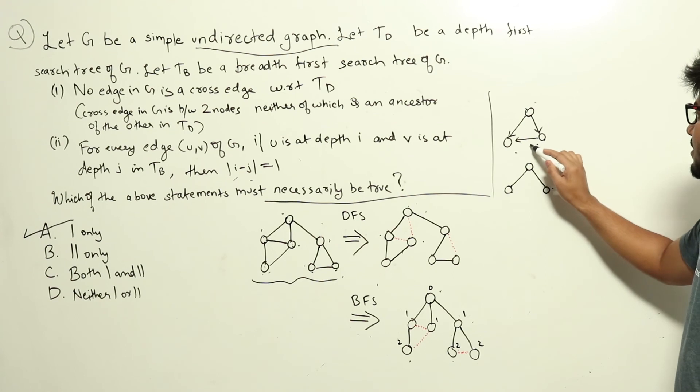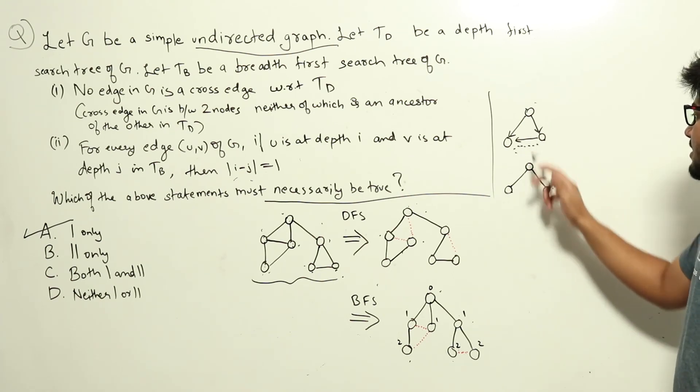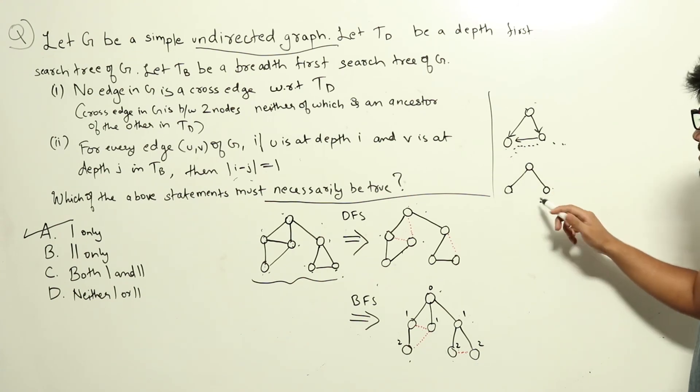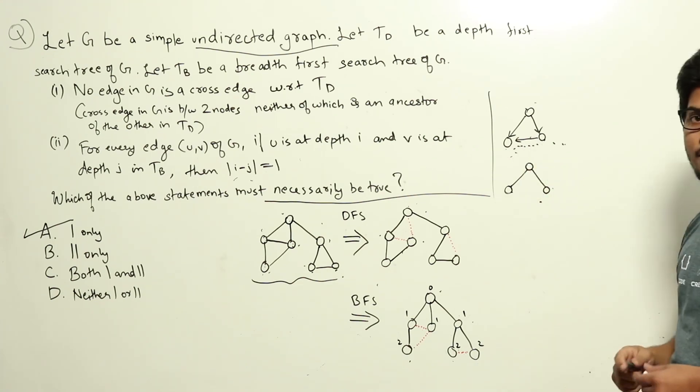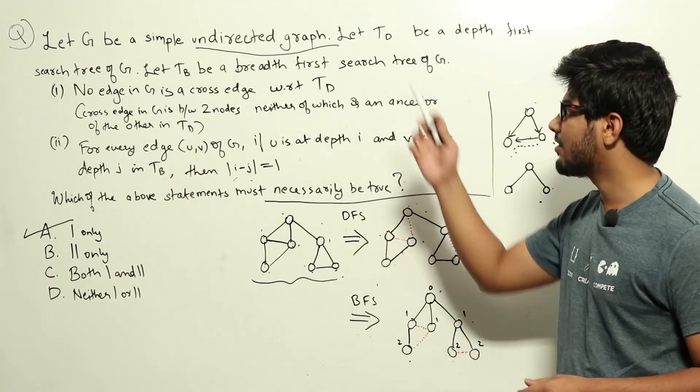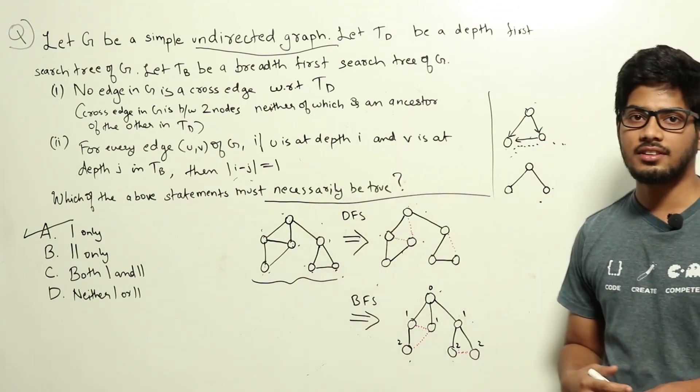And this edge is there in G. It is not there here. And neither of these nodes are ancestors of each other in this tree. So this is actually a cross edge. So for statement 1, cross edges can happen in directed graphs. But in the question they have given an undirected graph. So A only is the answer.